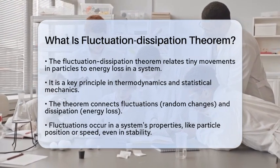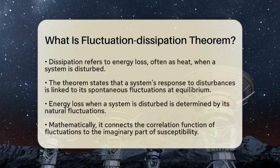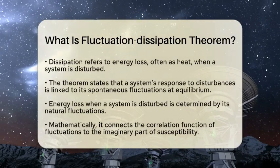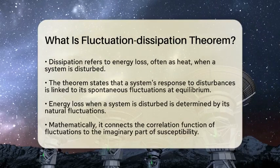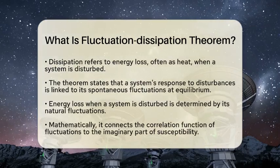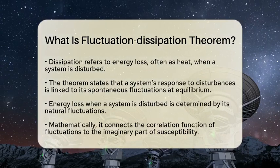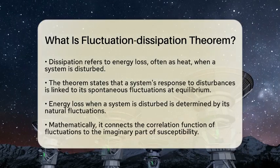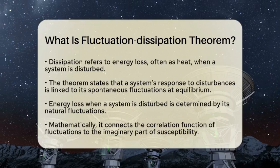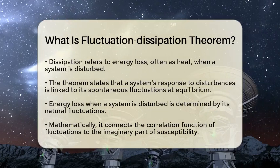The Fluctuation Dissipation Theorem states that how a system responds to a small disturbance is directly related to the spontaneous fluctuations happening in that system when it is in a state of equilibrium. In simpler terms, the way a system loses energy when it is pushed out of its stable state is determined by its natural fluctuations.